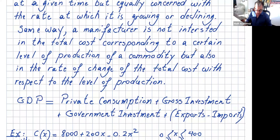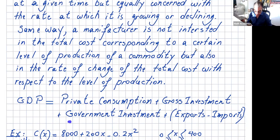Let me give some explanation about GDP. GDP is private consumption plus investment plus gross investment plus government investment plus exports minus imports. Each country has a GDP, and if the GDP is higher, that means the country is doing well economically. However, it's very important to know at what rate that GDP is growing or declining.